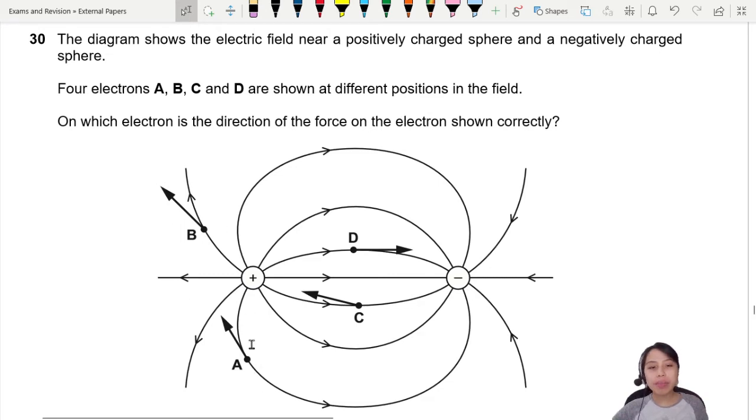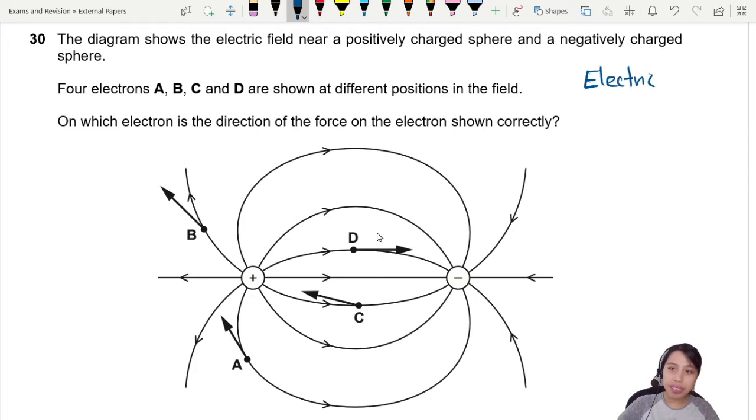So you notice these arrows here? These are the force arrows. One of them is correct, apparently. Most of them should be wrong. But how do you know which one is correct or not? Here's a few tips to help you think about the electric force in relation to the electric field lines.